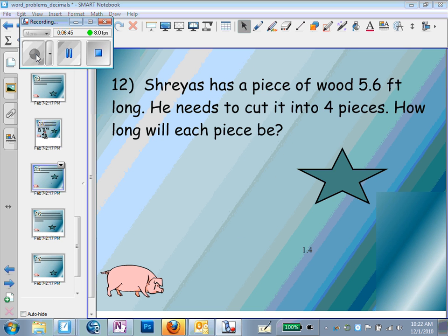Travis has a piece of wood 5.6 feet long, and he's going to divide it into four pieces. That means we're going to do 5.6 divided by 4. We're going to divide 4 into 5.6 to see how long each piece will be. 4 goes into 5 once with one left over, bring the 6 down. And 4 goes into 16 four times. So it's 1.4 feet. Each piece will be 1.4 feet.